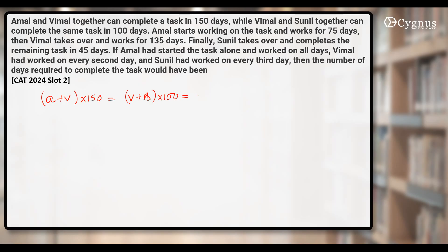But how are they going to start the work? Amal starts working on the task and works for 75 days, so his contribution becomes 75A. Vimal takes over and works for 135 days, so Vimal's contribution will be 135V. And finally, Sunil takes over and completes the remaining task in 45 days, so his contribution becomes 45S.